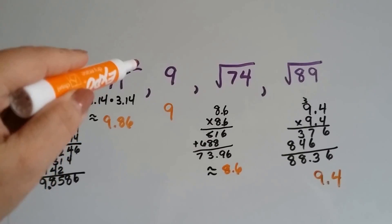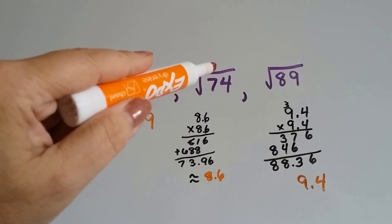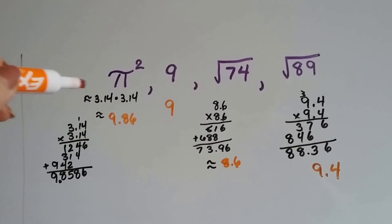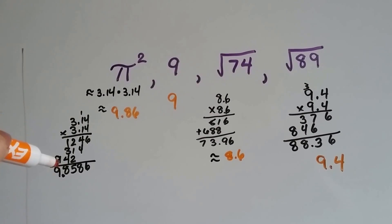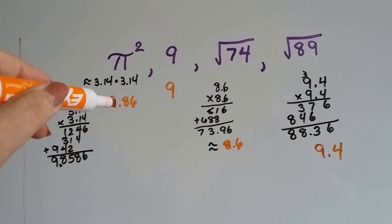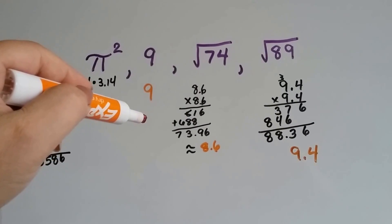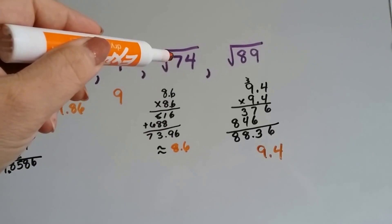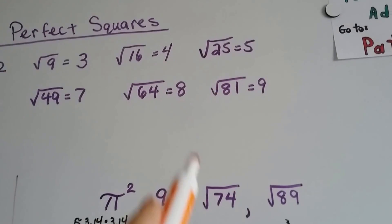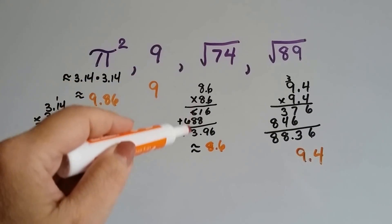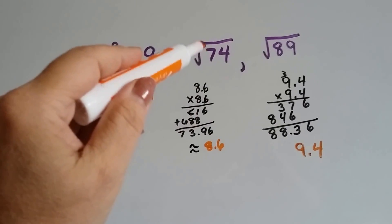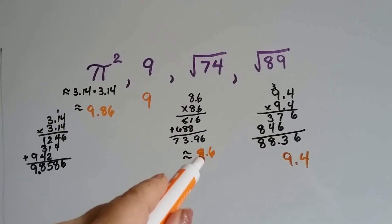What if we had pi squared, 9, the square root of 74, and the square root of 89? We can do the same thing. We can do pi times pi, approximately 3.14 times 3.14, and I got 9.8586, so I rounded it to 9.86. We know 9 is just 9, a whole number. The square root of 74 has got to be in between 8 and 9, so it's about 8.5. I tried 8.6 and got 73.96 — pretty close to 74, so I'll stick with the 8.6 approximation.